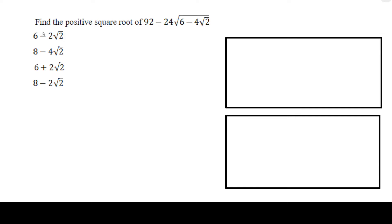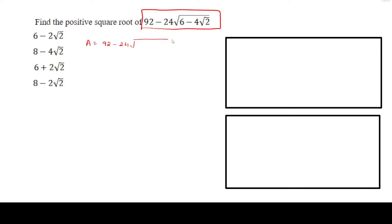Hi, hello, welcome to Learn with Sean. Today's question is: find the positive square root of 92 minus 24 square root of 6 minus 4 root 2. Let this be capital A equals 92 minus 24 square root of 6 minus 4 root 2.